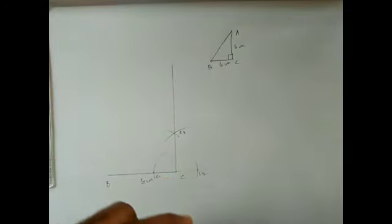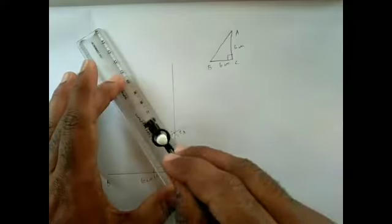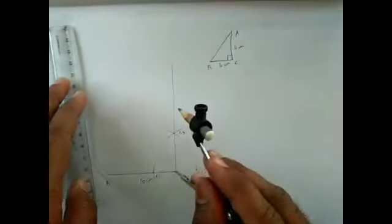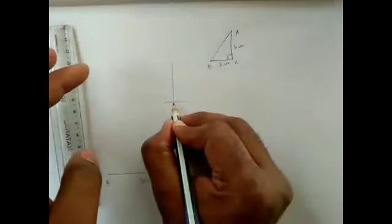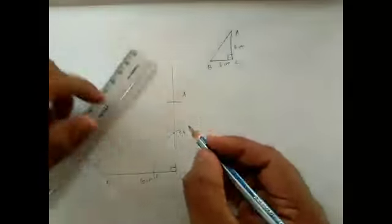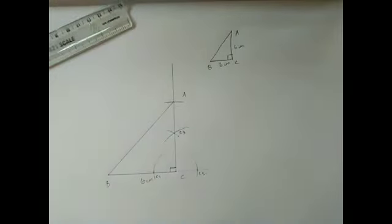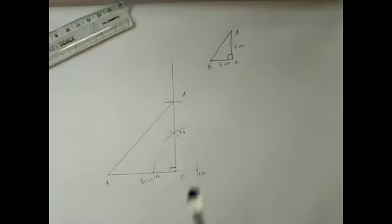After confirming 90 degrees, construct AC of 6 cm. With C as center, draw an arc of 6 cm along the 90-degree line — where the line and the arc meet is our point A. Join A and B to get the required right-angled triangle.